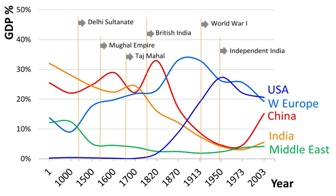Soon after, livestock became domesticated, particularly in the Middle East — goats, sheep, cattle — enabling pastoral societies to develop, to exploit lower productivity grasslands unsuited to agriculture.